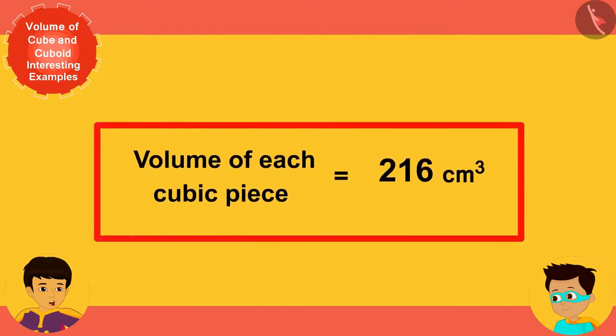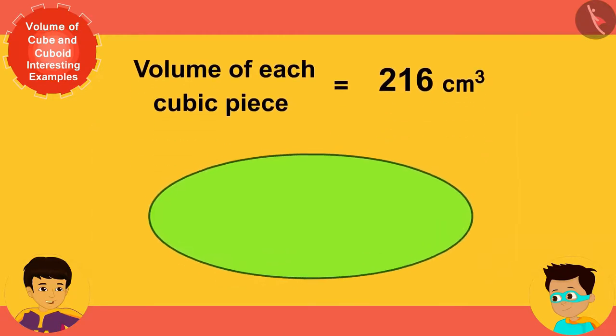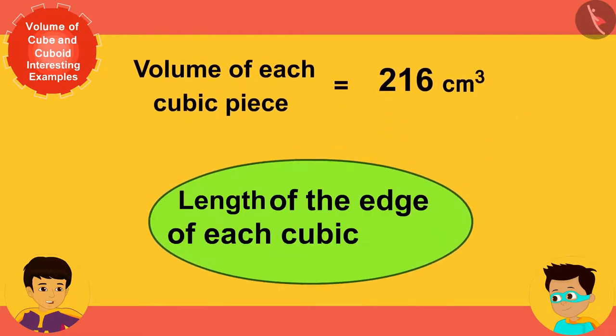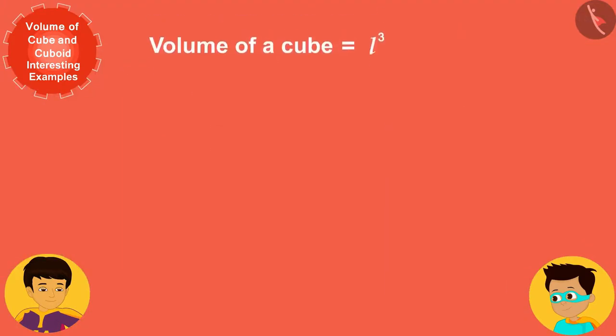Now we have come to know the volume of each piece of cake, but how will we find the length of the edge of each cubic piece? It's simple, because the volume of a cube is the cube of its side, therefore